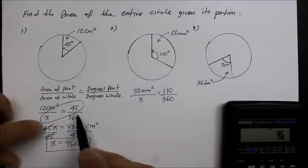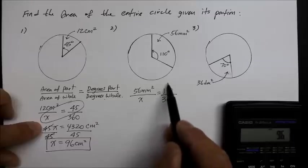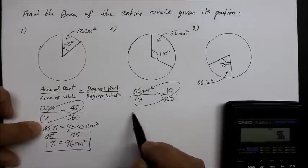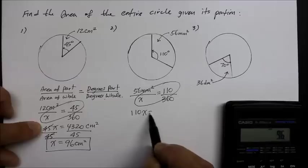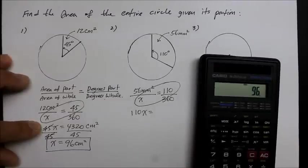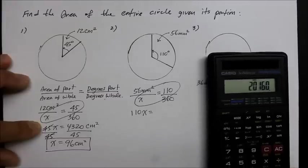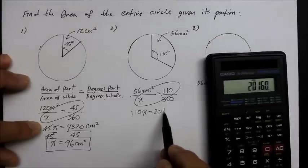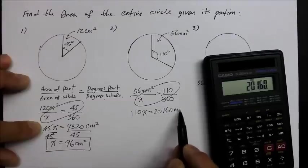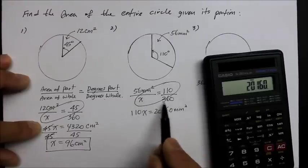And let's go ahead and use the cross multiplication method. So, start with the x term first. It just makes it easier. x times 110 is 110x. What's 56 times 360? Let's go ahead and use the calculator for that. 56 times 360. And that equals a big number. 20,160. And it is millimeter squared. That's the unit measurement.